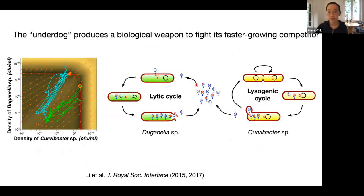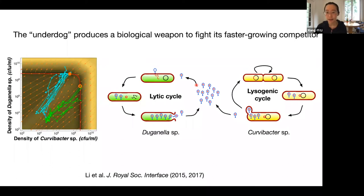Combining both studies, we found that these two bacteria can coexist despite consuming the same nutrient. They compete on the same nutrient, but the slowly-growing bacteria hosts the phage, which infects the faster-growing bacteria and releases more phage particles in a self-reinforcing way. This is basically like the slowly-growing bacteria paying a cost to produce a weapon against its fast-growing competitor. At this point, I was deeply impressed by how evolution can produce such elegant and smart solutions to the coexistence problem.